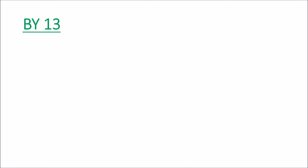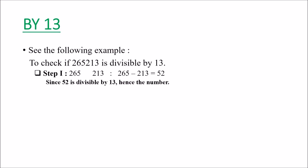Now let us see the divisibility test for 13, which is similar to the test for 7. To check if a number is divisible by 13, we split it into two parts — 265213 becomes 265 and 213. The difference of these two parts is 52. Since 52 is divisible by 13, the whole number is divisible by 13.